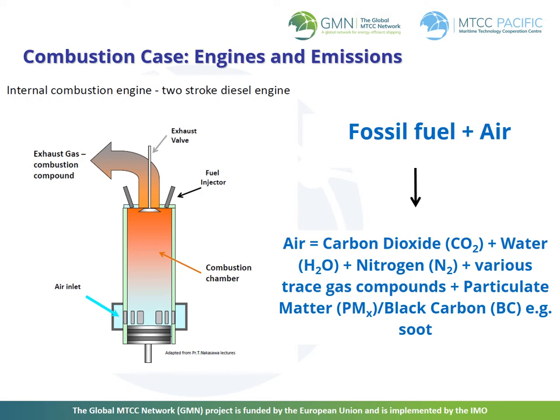It was due to this high efficiency and economic advantage that after the oil crisis of 1973 and the rise of oil prices, diesel engines dominated the shipping industry at as much as 99%. However, some narrow sectors of the industry, about 1%, still rely on other kinds of heat engines such as steam turbines and gas turbines. Such uses, including use of nuclear energy in shipping, are for operational or functional reasons, in particular in Navy applications.